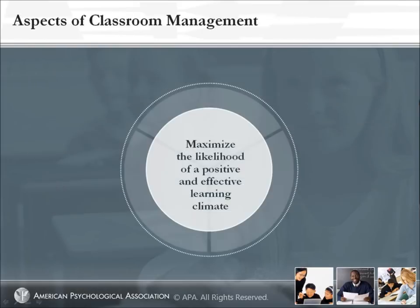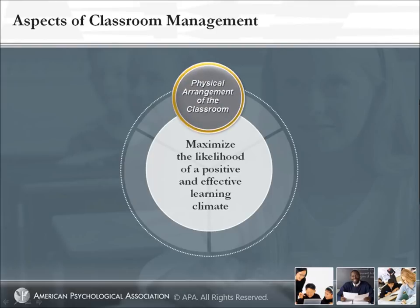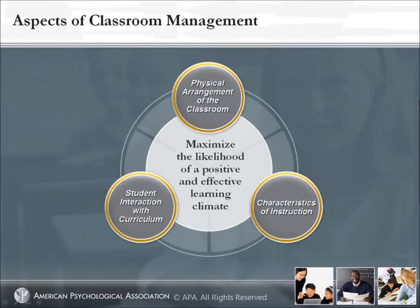There are a number of ways in which effective teachers structure their classrooms, their instruction, their curriculum, and their rules and procedures to maximize the likelihood of a positive and effective learning climate. In this section, we will review those findings in the areas of: 1. Physical arrangement of the classroom, 2. Characteristics of instruction, and 3. Student interaction with curriculum. For each area, we provide a set of questions that can help you in evaluating and perhaps restructuring your own classroom to create the optimum environment for learning.